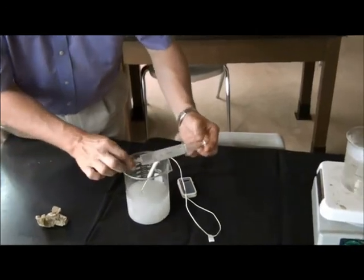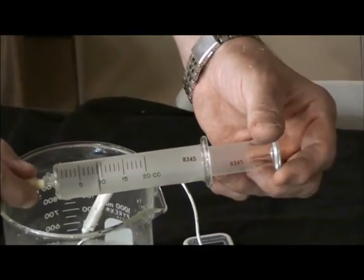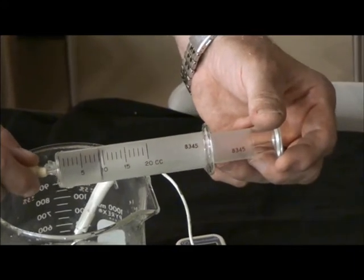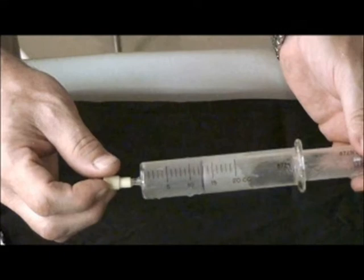After we give our system time to reach thermal equilibrium, we see that the volume of the gas in the syringe placed in the ice-filled bath has dropped to 8.9 milliliters, while the volume of the gas in the syringe that we placed in the boiling water bath has expanded to a volume of 12.5 milliliters.